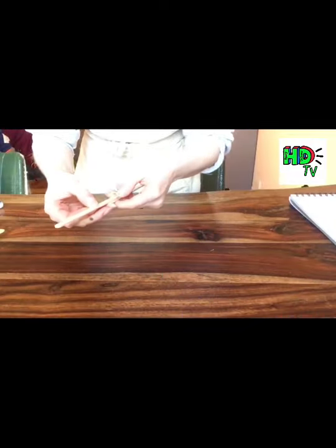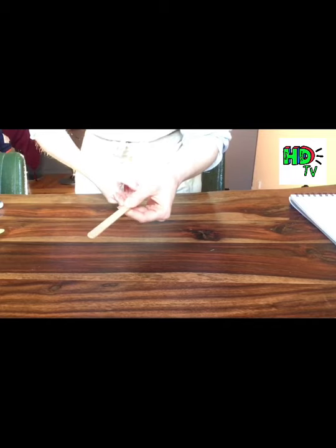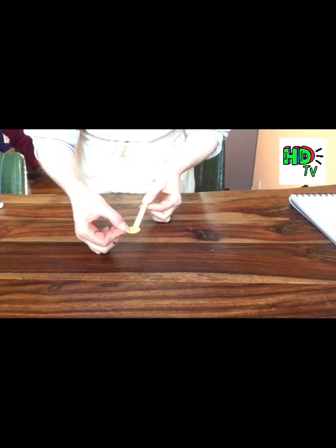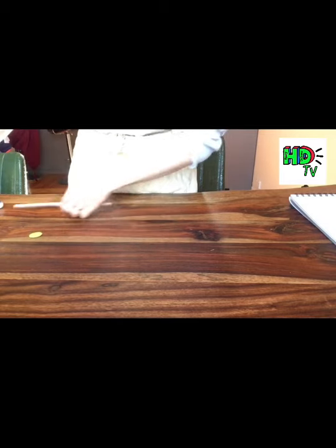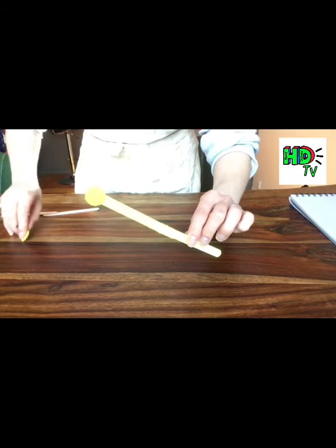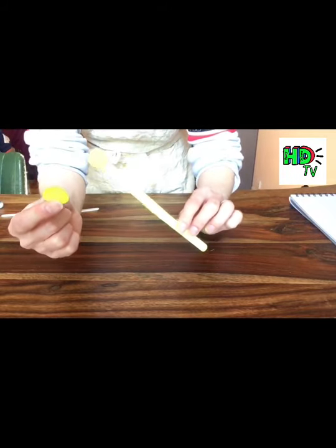Whilst that's drying I'm going to take two lollipop sticks, a good excuse to eat an ice cream or two, and I'm going to glue them or sellotape them together. I'm going to cut out a cardboard circle from a cereal box and glue it onto the top like this and then cut out another circle from the cardboard cereal box and place that to the side.